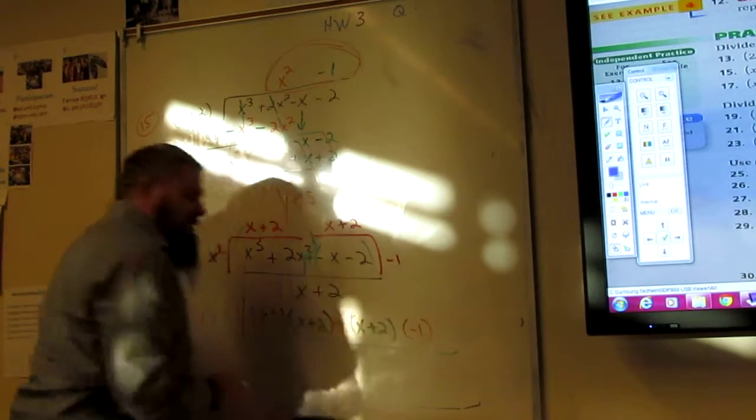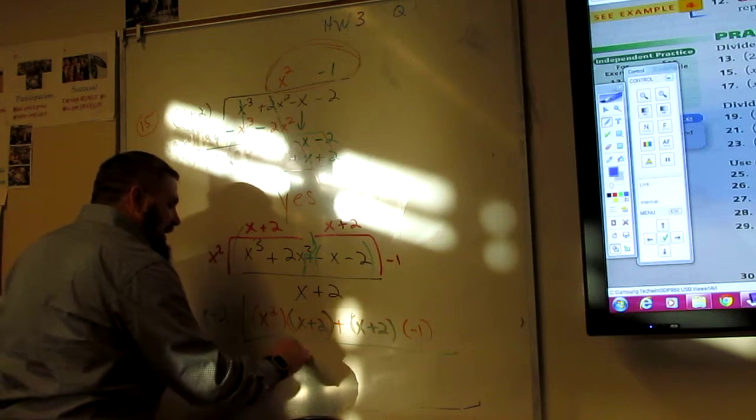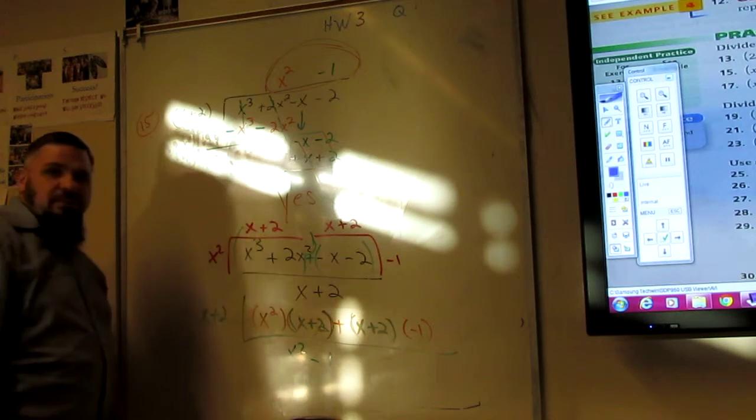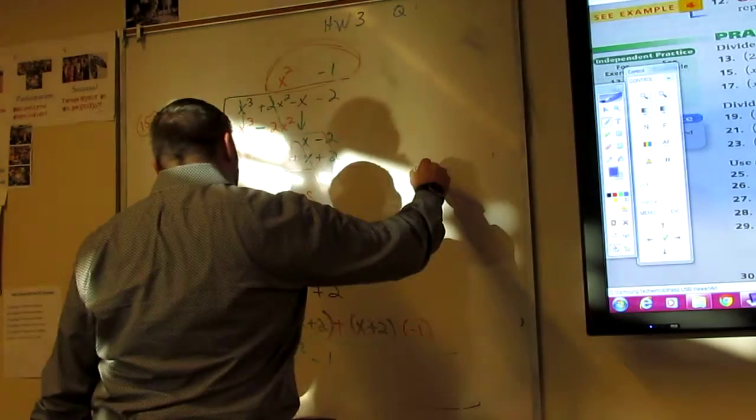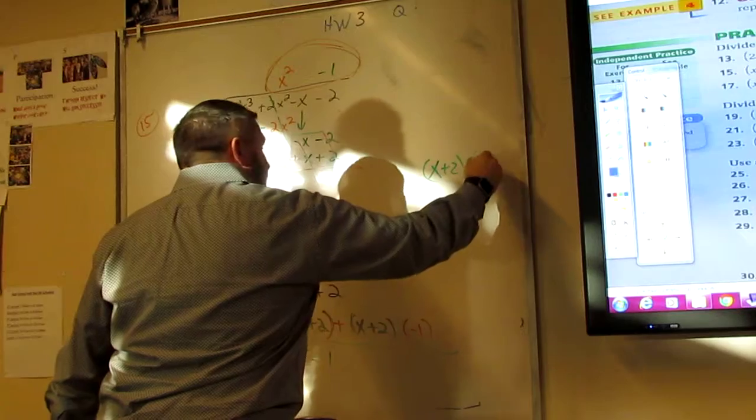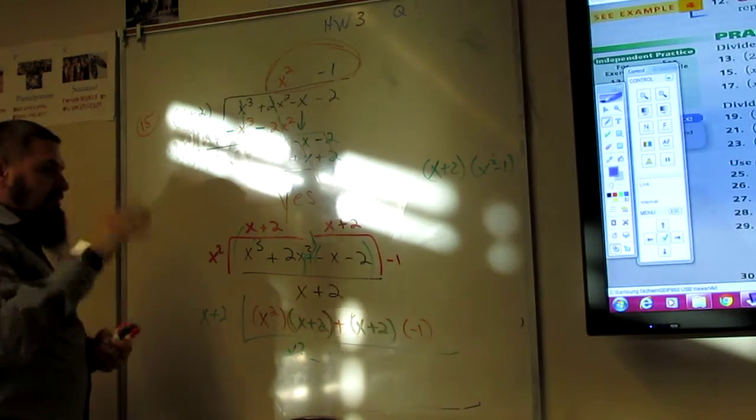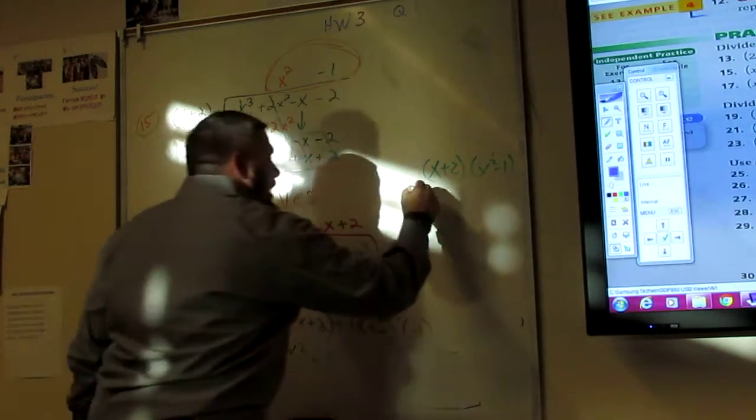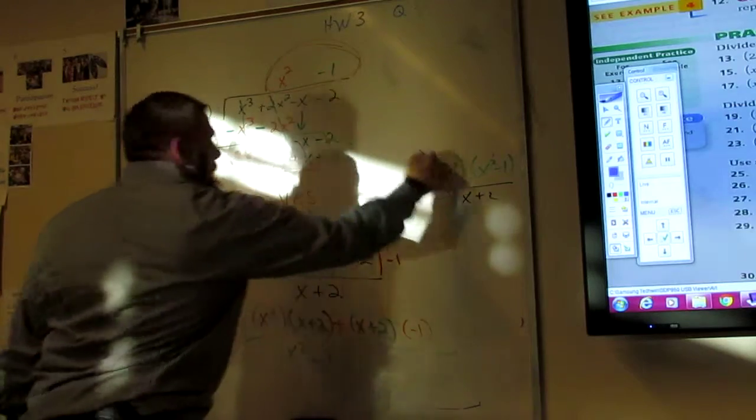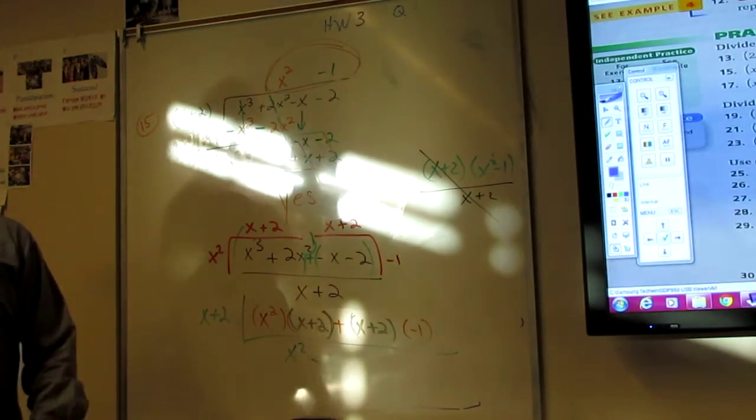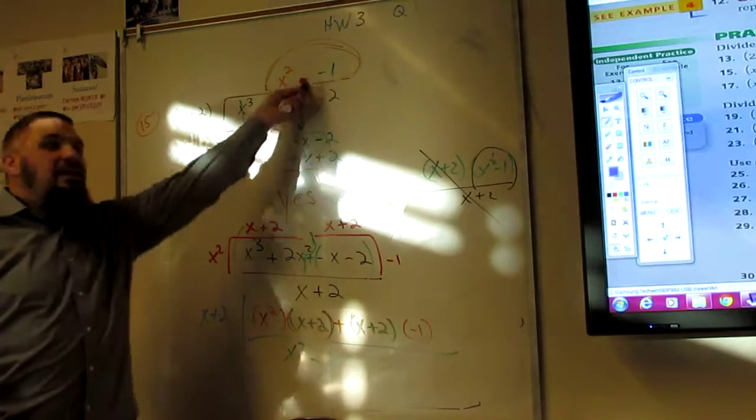So, I would do, again, upside-down division. I would pull out the x plus 2, and what am I left with? x squared minus 1. So, what do I have? I have x plus 2 times x squared minus 1. I can still factor that, but I'll slow down for a second. All over x plus 2. And what happens? Pachowee. What am I left with? Pachowee. The same thing that it was.